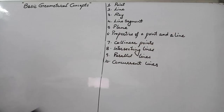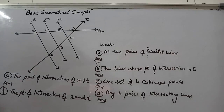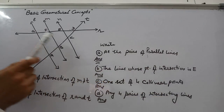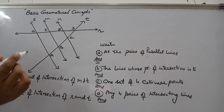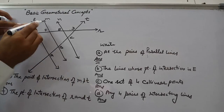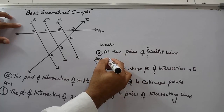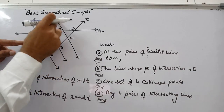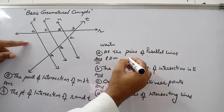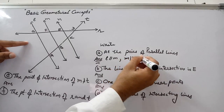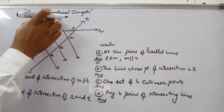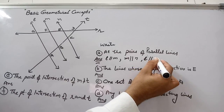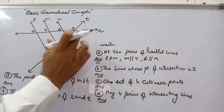So this is about all these terms. Now let us solve this question — write all the pairs of parallel lines. In this figure, L line is parallel to M line, so the first pair is L parallel to M. Next is M parallel to N. And third, L and N are also parallel, so L parallel to N. So these three pairs are there.